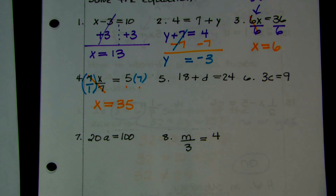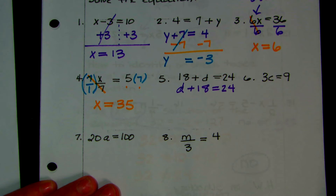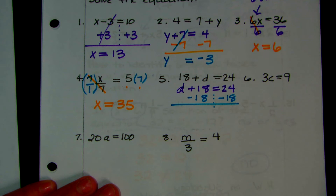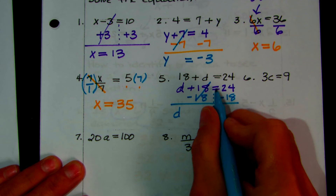On number 5, if you don't like how this looks, you could switch it to d plus 18 equals 24. How do you move 18 to the other side? If it's addition, you're going to subtract. Remember, the equal sign splits the sides of the equation, and whatever you do to one side you have to do to the other to keep it balanced. 18 minus 18 adds out, d comes down, and 24 minus 18 would be 6.